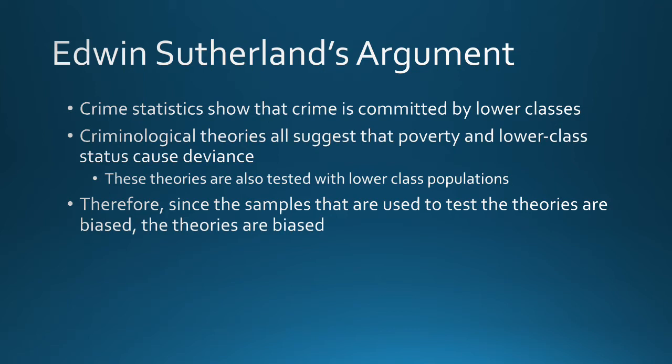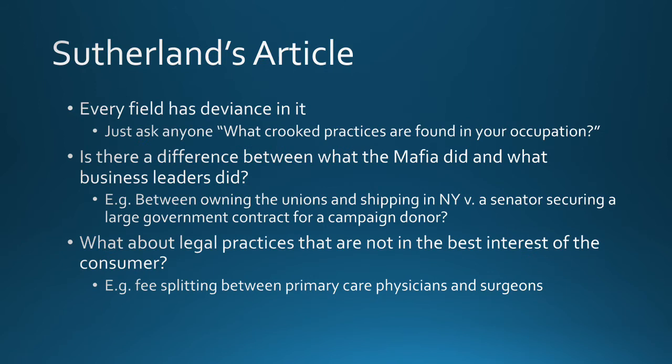We've kind of entered into an echo chamber. We're using a biased sample to test biased theories based on potentially biased crime statistics. If the theories are tested using biased samples, the theories themselves are inherently biased. That's basically what Sutherland argued — because of how the laws were created, wealthy people were not subject to the same rules and regulations as non-wealthy or non-powerful people.